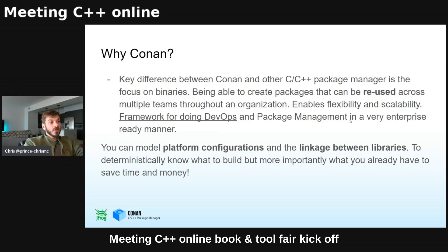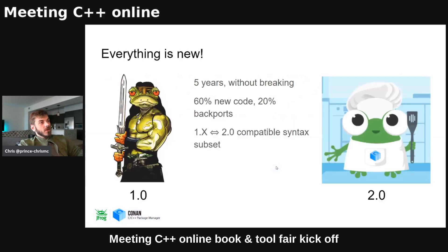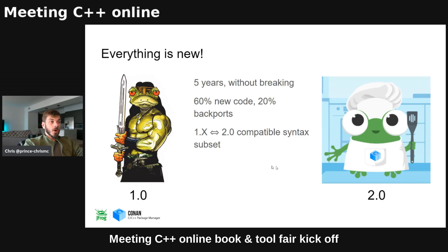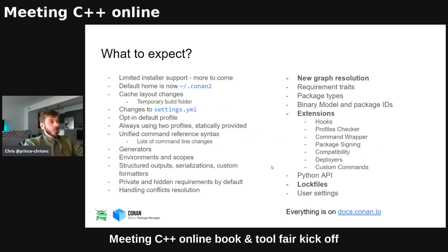What's new in Conan 2.0? Quite literally everything. There's been five years without a breaking change, and that commitment to stability is still true with 2.0. About 60% of the codebase is new and about 20% is back-ports. The example I showed is completely compatible with Conan 1.x as well, so you can use the latest in 1.x and then plan your migration to 2.0. This was done intentionally with very thoughtful design. On the left of this slide you can see breaking changes — structural changes to how the client works — and on the right, a long list of new features.